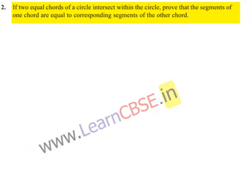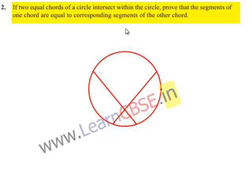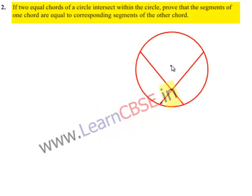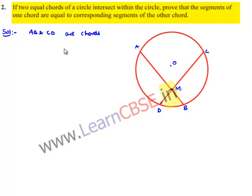Moving on to the solution, let us consider a circle as shown in the figure. Let the circle have center O, and let AB and CD be chords of equal length that intersect at point M. Therefore, AB and CD are chords such that AB is equal to CD, and AB and CD intersect at point M.